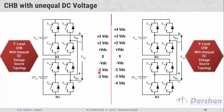With VH1 equal to zero and VH2 equal to minus 2VDC, zero plus minus 2VDC gives minus 2VDC at the output terminal. To produce minus 3VDC, the diagonal switches from H1 and the diagonal switches from H2 are turned on, giving VH1 equal to minus VDC and VH2 equal to minus 2VDC, so minus VDC minus 2VDC equals minus 3VDC. This is how, by executing the switches of H1 and H2 in a specific manner, we can produce these seven levels across the output terminal.